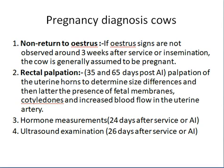The fourth method is ultrasound examination. We need an ultrasound machine for that. For hormone measurements we usually use kits, but for ultrasound we need an ultrasound machine — we have one here at the agricultural university. From ultrasound examination you can easily tell if the cow is pregnant or not.